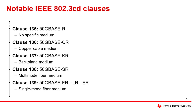Clauses 136 through 139 define the physical medium dependent sublayer of 50 gig Ethernet across various mediums. Clause 136 applies to copper cable mediums, represented by the C in 50G Base CR. Clause 137 applies to backplane mediums, represented by the K in 50G Base KR. It's important to note that both of these specifications require auto-negotiation, which is a feedback protocol used to find common transmission parameters between two devices.